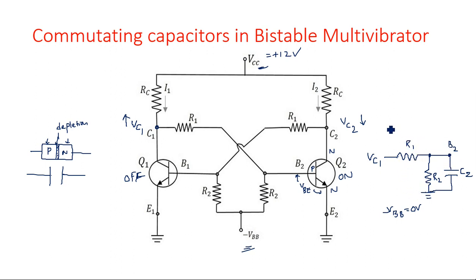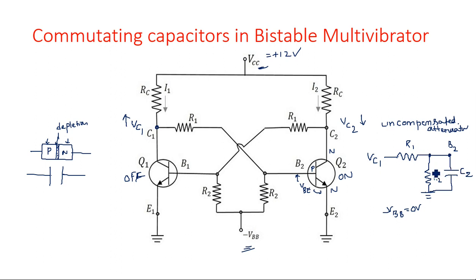There exists a virtual capacitance from the base 2 to ground, let's call it C2. This network — R1, R2, and virtual capacitor C2 — acts as an uncompensated attenuator. In a pure attenuator there should be no capacitor; if a capacitor exists on one side, the other side must also be compensated. Without compensation, undamped oscillations occur and the voltage at base 2 takes a very long time to stabilize — this is the transient response.